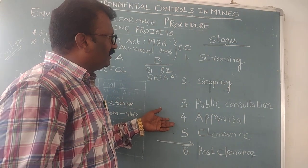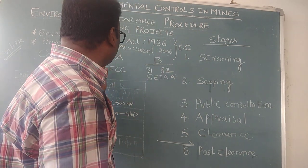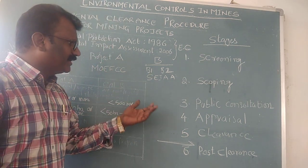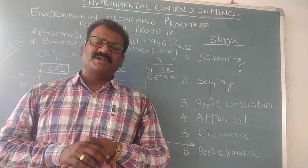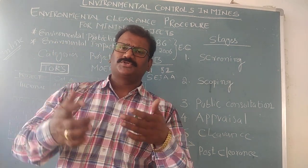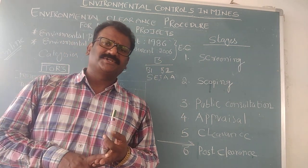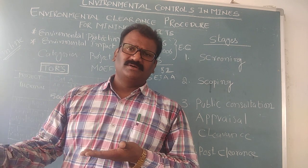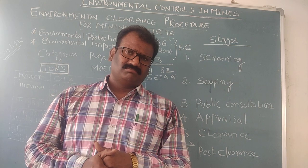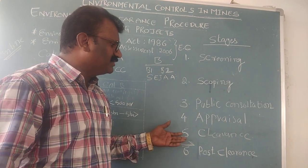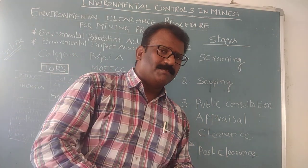After completing all the above stages, the appraisal stage begins. Depending on whether the project is Category A or B, the respective authority issues an appraisal report. The clearance certificate mentions conditions related to socio-economic situation, rehabilitation conditions, soil damage, carbon emissions, and the undertakings promised by the project proponent. Based on these conditions, the clearance certificate is issued to the concerned project.